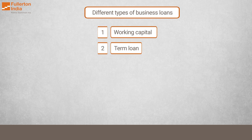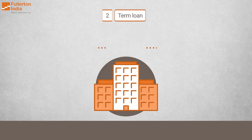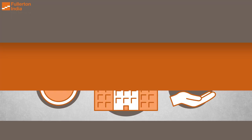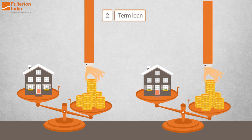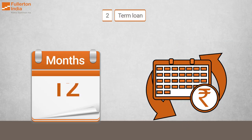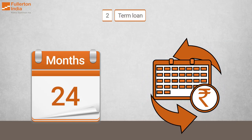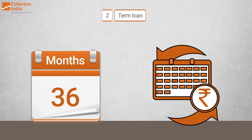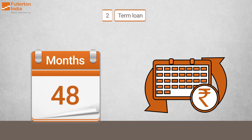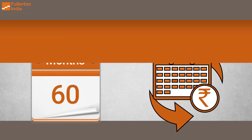2. Term Loan. One of the most common types of business finance is a term loan. The loan could be secured or unsecured in nature. These loans have a predefined tenure within which they have to be paid through regular installments.